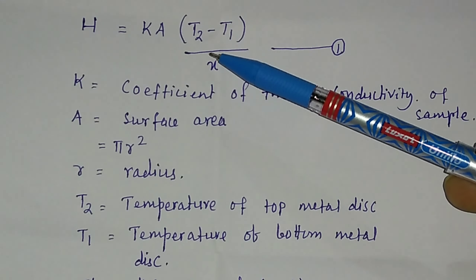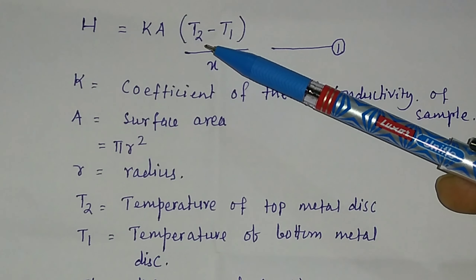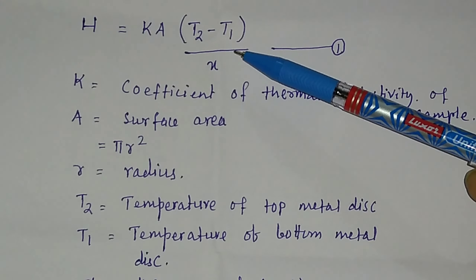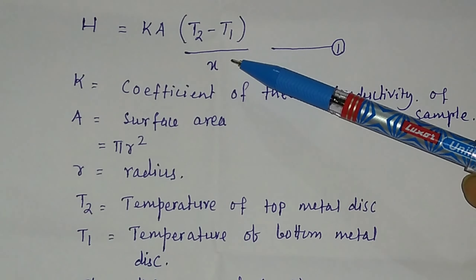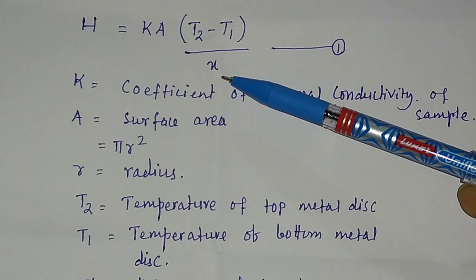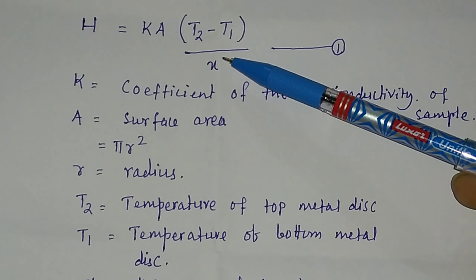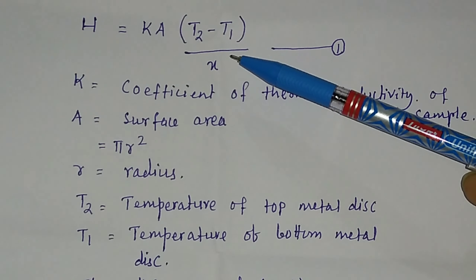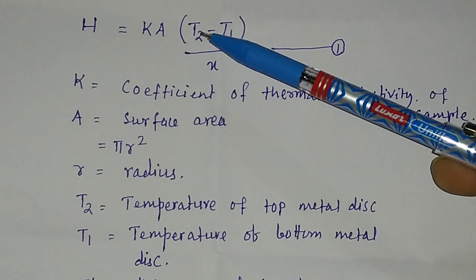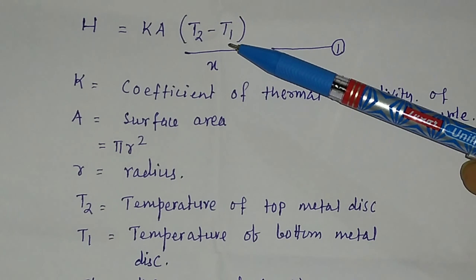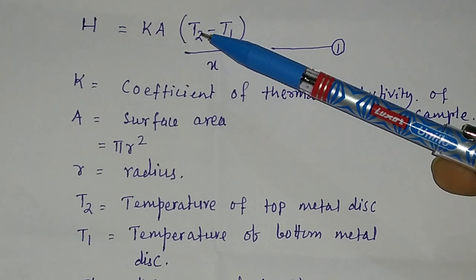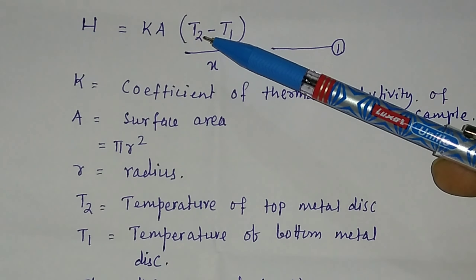In the experiment, T2 will be nearly 100 degrees Celsius and T1 will be about 92 or 93 degrees Celsius — a difference of 7 to 8 degrees — because the top metal disk is at a higher temperature and the bottom metal disk is at a lower temperature, as heat cannot flow easily through the bad conductor.